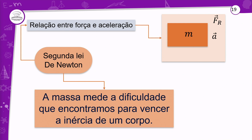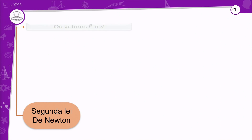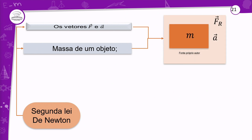É mais fácil parar um carro popular do que um caminhão — da mesma maneira que para entrar em movimento. A inércia do caminhão é muito maior que a inércia do carro. Os vetores força e aceleração têm a mesma direção e sentido — se você aplica uma força no corpo, ele vai acelerar naquela direção e sentido. O único que não é vetorial é a massa — ela é escalar e não muda com a direção ou sentido. A expressão matemática é F igual a M vezes A, lembrando que é a força resultante.